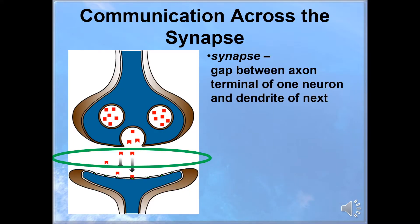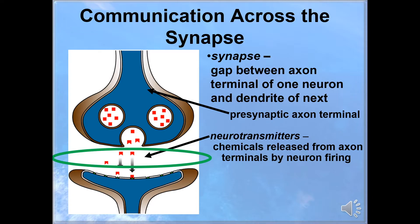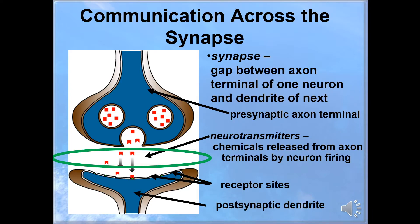Here we'll see how it is that the neurons communicate. There are two neurons and then a space in between that's referred to as the synapse. The axon terminal on the top is the presynaptic axon terminal, and it is releasing a neurotransmitter into the receptor sites of the postsynaptic dendrites of the next neuron. The receptor sites are very smart, and they only accept the message if the key fits, meaning that the postsynaptic dendrites are designed to accept a certain neurotransmitter and only a certain amount of that neurotransmitter. This helps regulate the amount that is passed on from one neuron to the next.